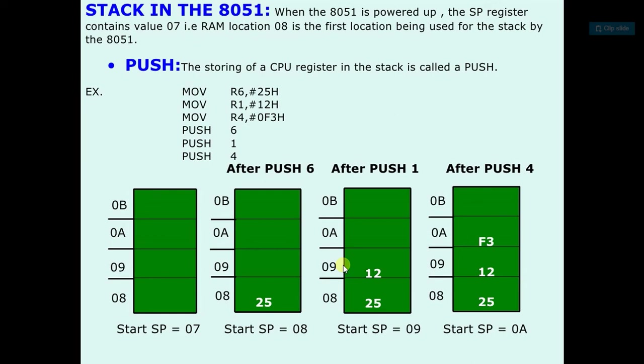So see the example, MOV R6 immediate data 25H. So R6 is equal to 25H after this instruction. Same for R1 and same for R4. So after the first three instructions, R6 is equal to 25H, R1 is equal to 12H, and R4 is equal to 0F3H.